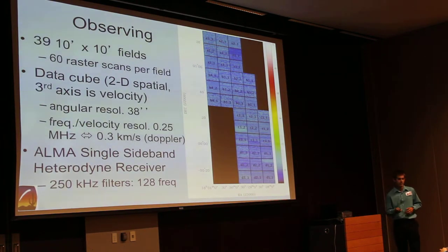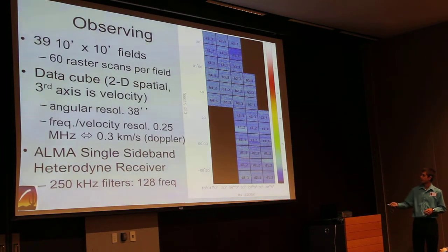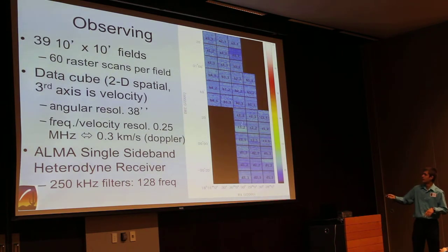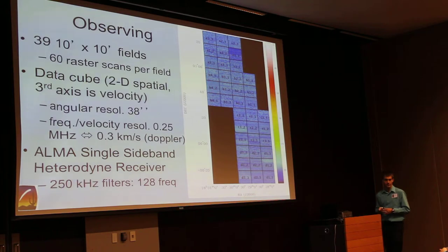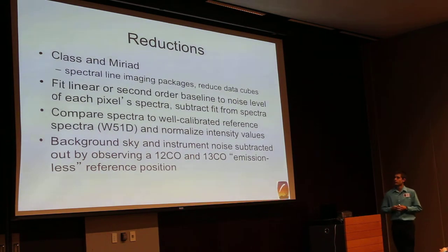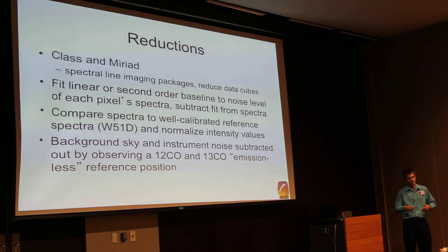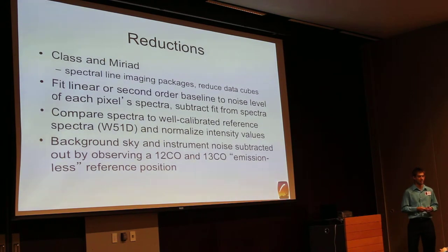Our data consists of 1.2 square degrees on the sky, with 39 ten-arc-minute by ten-arc-minute fields shown as black boxes. The variations of blue correspond to the RMS of our data. To reduce the data, I used two spectral line imaging packages, CLASS and MYRIAD, and then applied basic reduction techniques to subtract off instrumental noise and background scale.